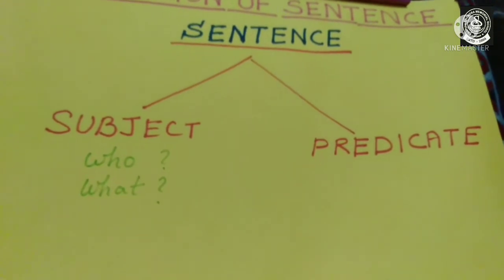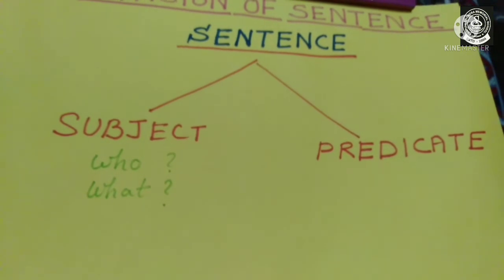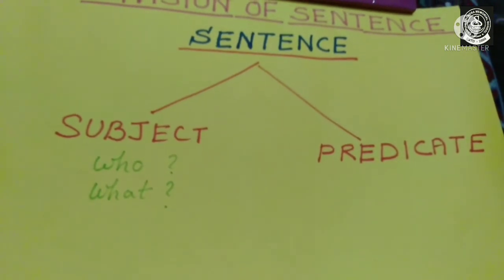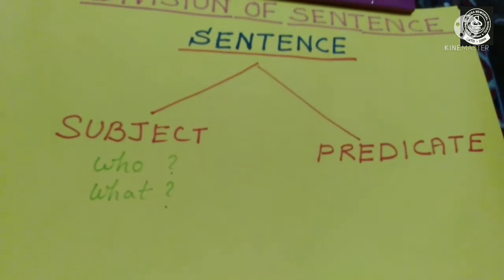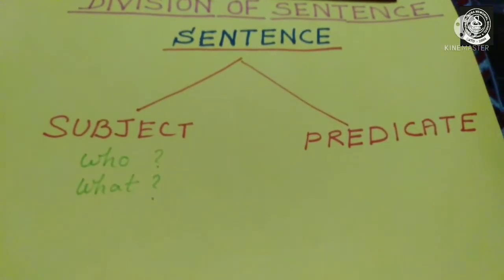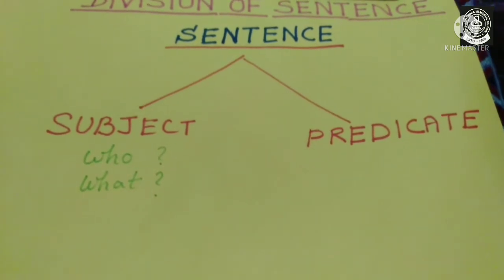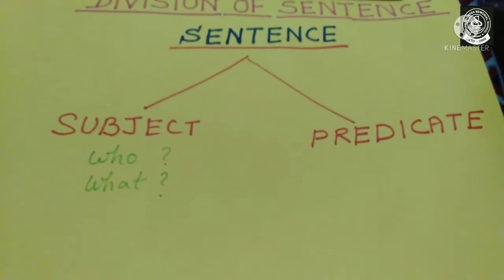Now coming to the predicate. What do you mean by the predicate? What is said about the subject is called the predicate. There is always a verb in the predicate. The predicate gives us information about what the subject of the sentence is or is doing.